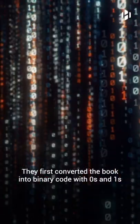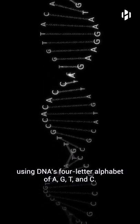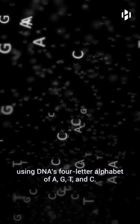They first converted the book into binary with zeros and ones, and then stored this information using DNA's four-letter alphabet of A, G, T, and C.